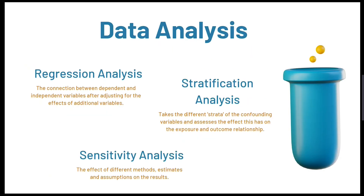There are a few types of data analysis which could be used in a cohort study. For example, regression analysis looks at the dependent variables (i.e. the outcomes of the study) and independent variables (i.e. the intervention and measured baseline characteristics), and studies the association between these variables after adjusting for the effects of other variables. Types of regression analysis include linear and logistic.